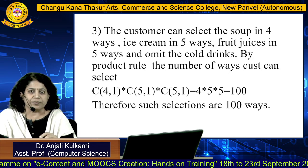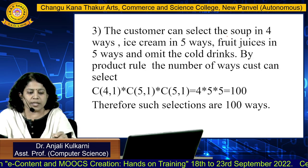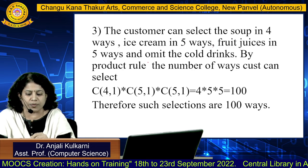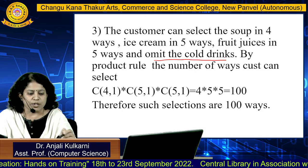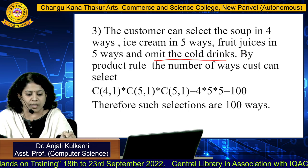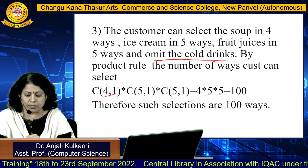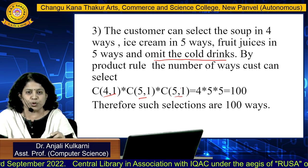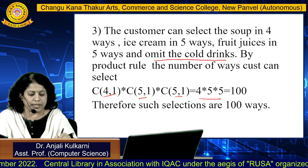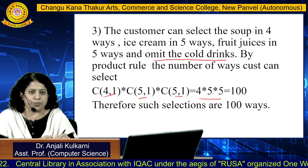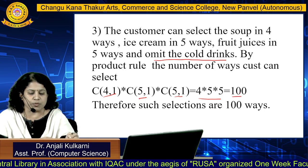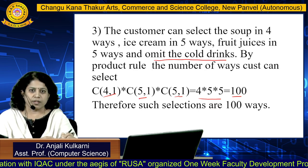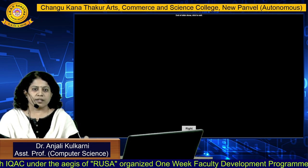For the third condition, the customer can select soup in 4 ways, ice cream in 5 ways, and fruit juices in 5 ways — omitting only cold drinks. By the product rule: select 1 out of 4, select 1 out of 5 for ice cream, and select 1 out of 5 for fruit juices. The final answer is 4 × 5 × 5 = 100. Therefore such selections are 100 ways. Thank you friends.